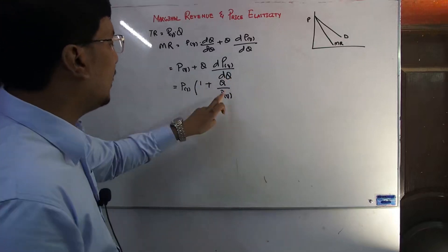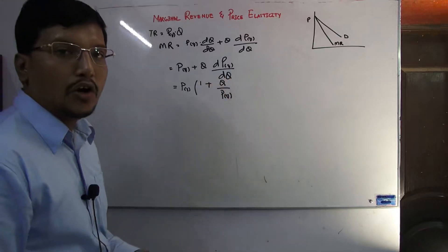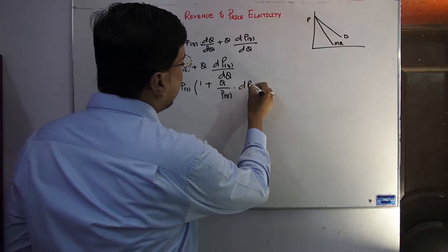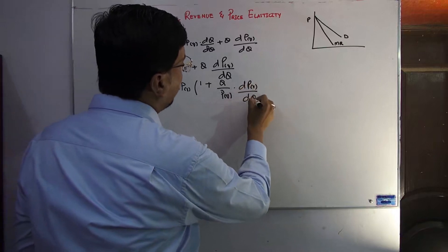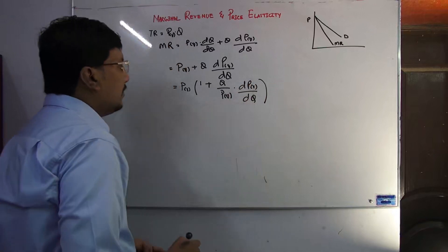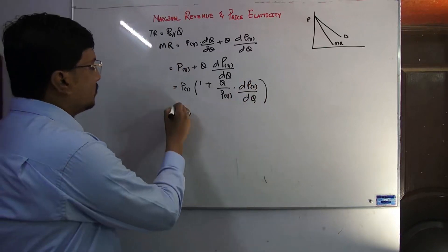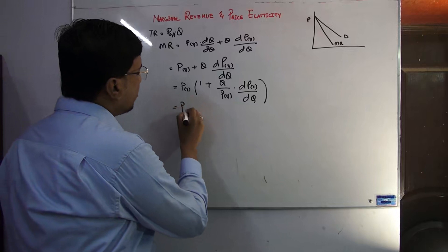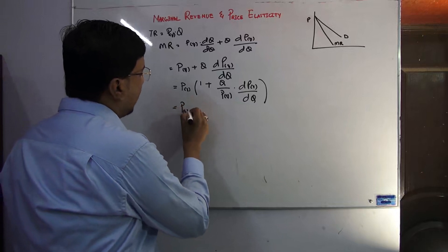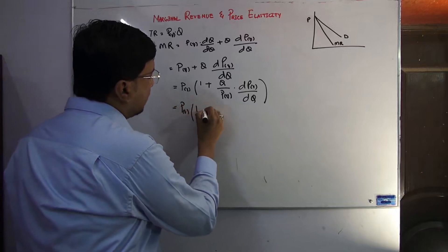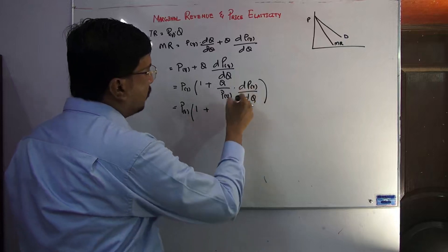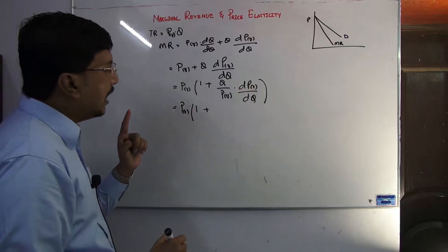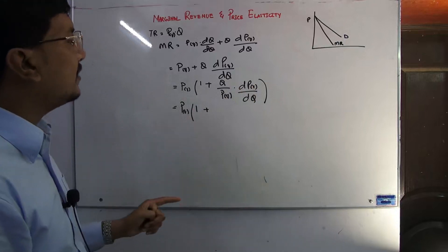When we multiply P again, these cancel out and there is no lone P remaining. We also have dP and Q attached. So when we evaluate this again, P becomes equal to one plus a term — and this entire expression essentially forms a type of elasticity.